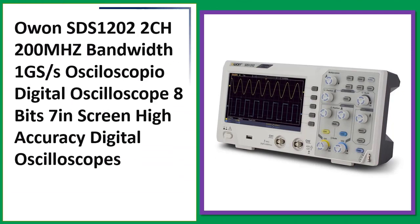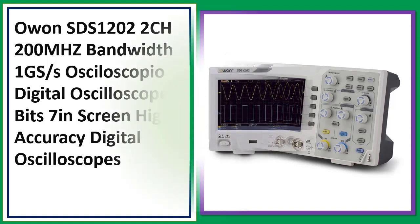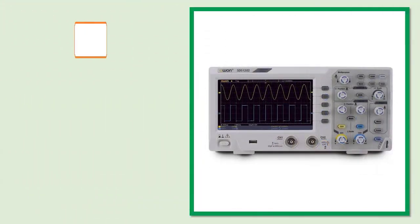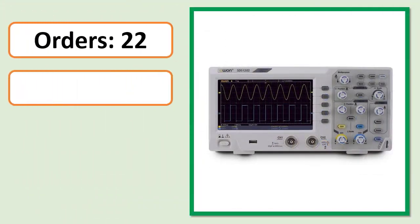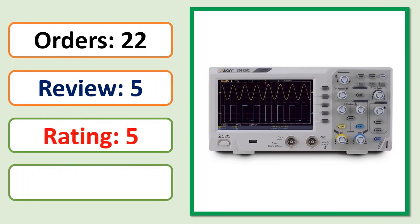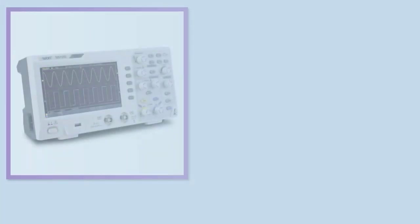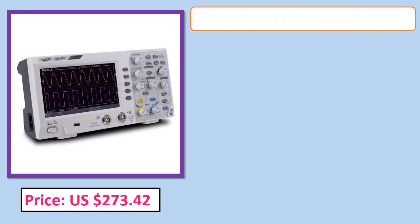Number 3: OWON SDS 1022, SDS 1102, SDS 1202, SDS 1104 — 1GS/s, 100 MHz digital oscilloscope, 2-channel. Review rating, percent off, price, and specifications are shown.